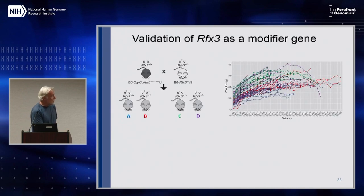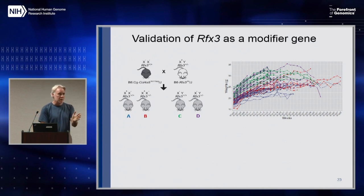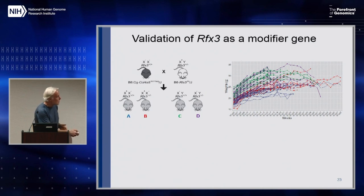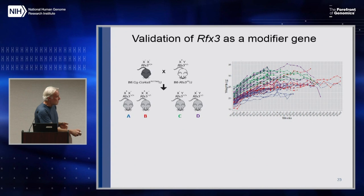We kind of had a good idea because we mapped it, but mapping is never proof. So what we did is we took a B6 knockout mouse — probably made with CRISPR — and we crossed it to a Col4A5 mutant, and we get four groups of mice.